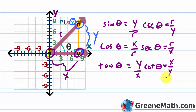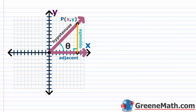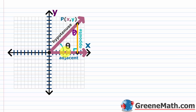Now let's explore a different way to look at this. Instead of calling this side y, we're going to refer to it as 'opposite' because it's opposite this angle theta. Pay attention to where the angle is, because if you change the angle, the opposite side changes too. So this side is opposite of your angle theta.